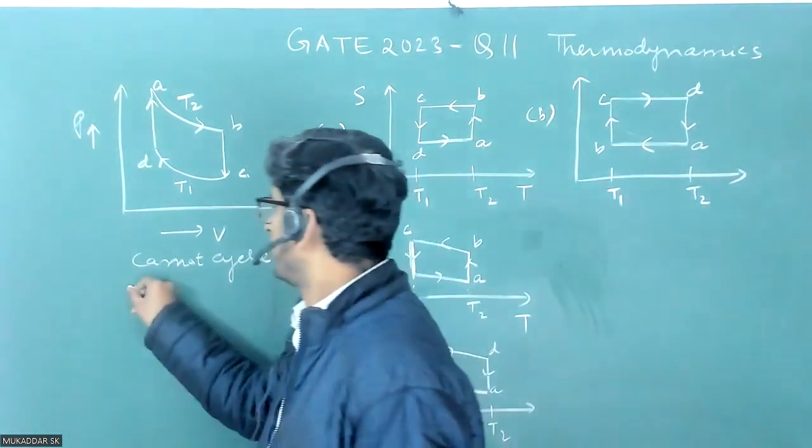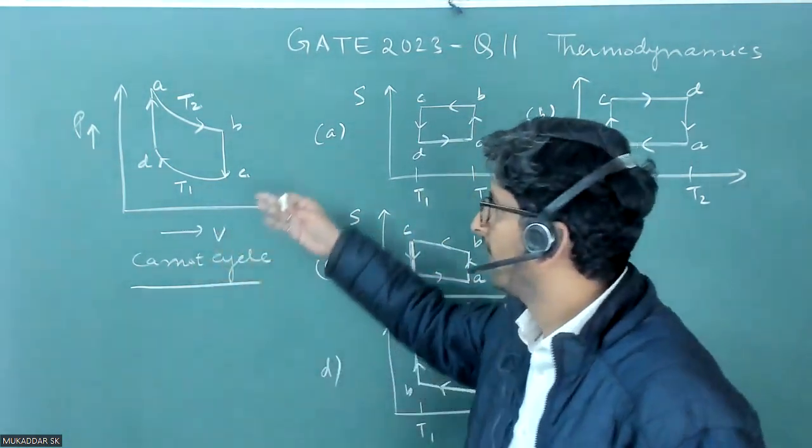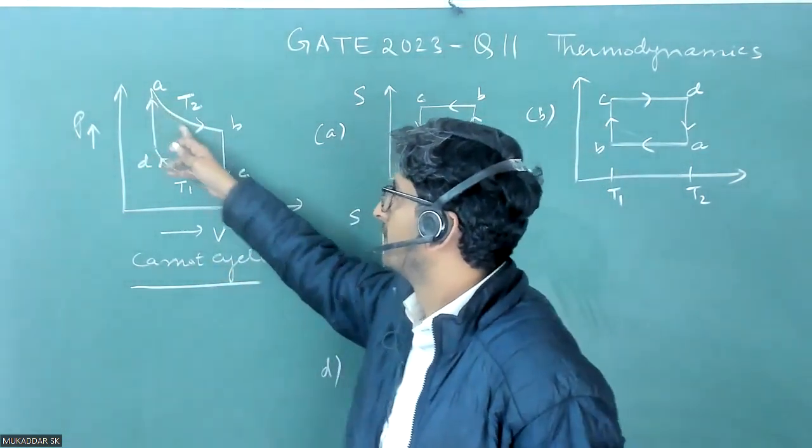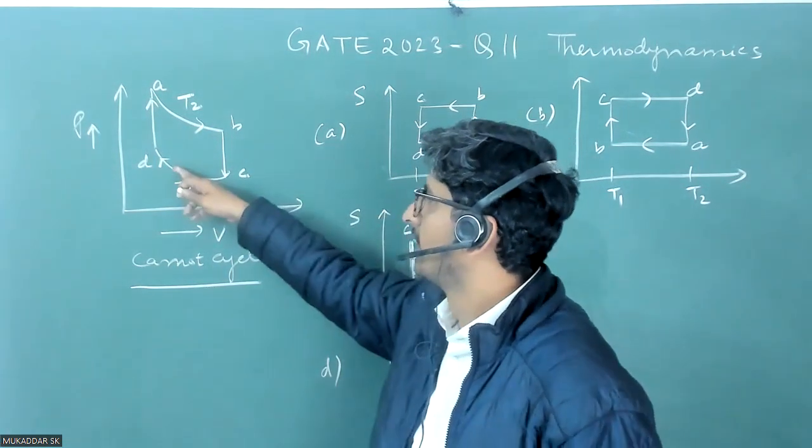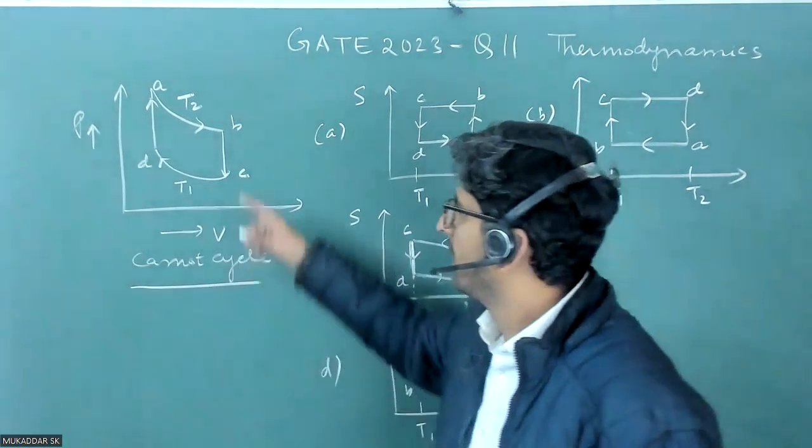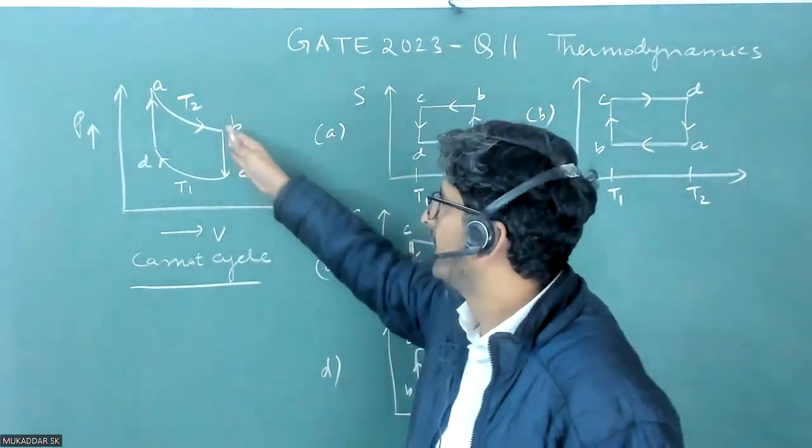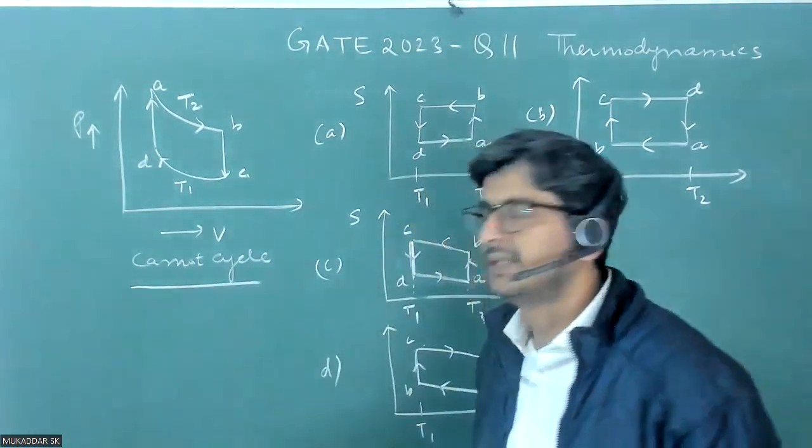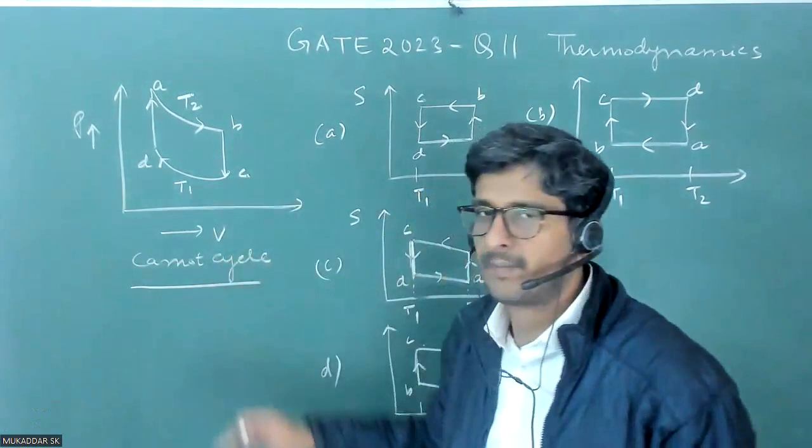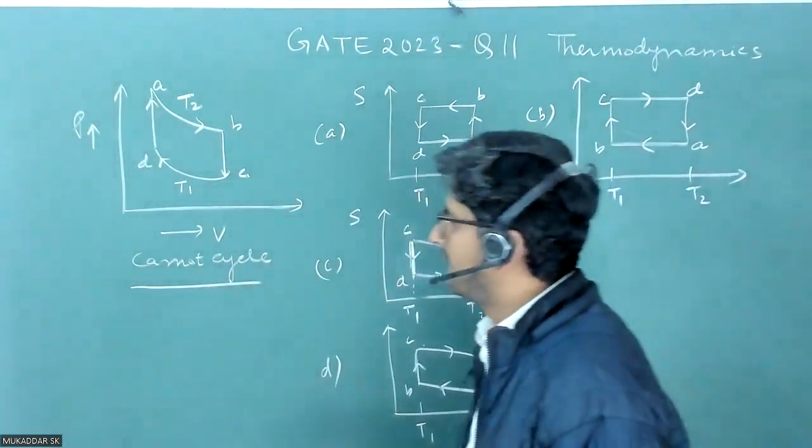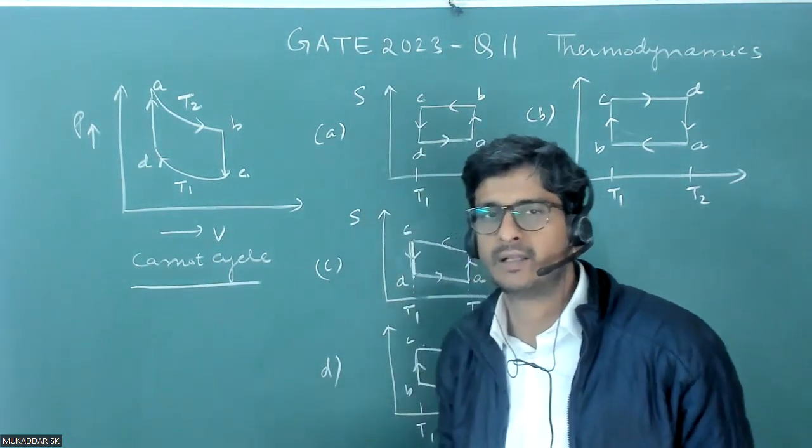They have given a Carnot cycle but the problem is that Carnot cycle should have isothermal expansion then adiabatic expansion then isothermal compression and adiabatic compression. But here in making the diagram it appears that almost this BC is at constant volume so there is no expansion. I think they have given it as Carnot cycle so it was a mistake in the figure actually.